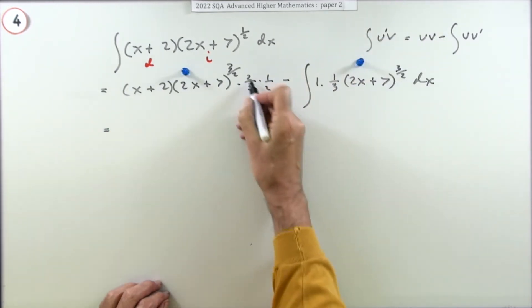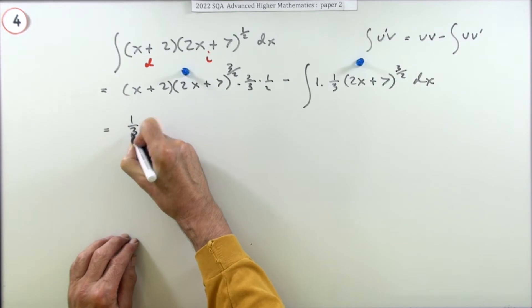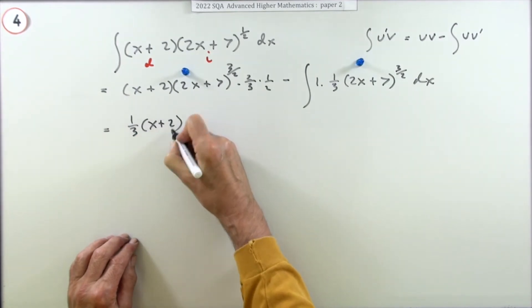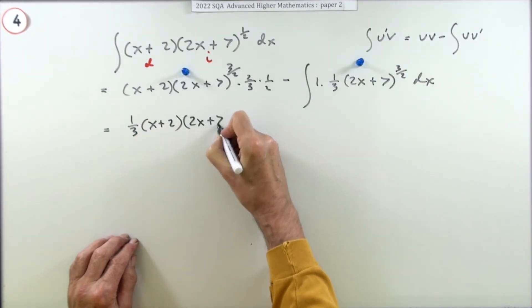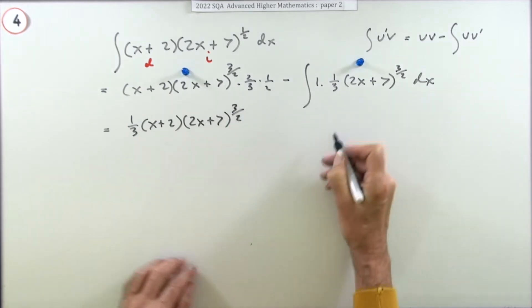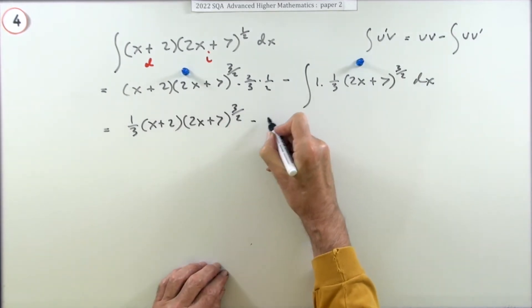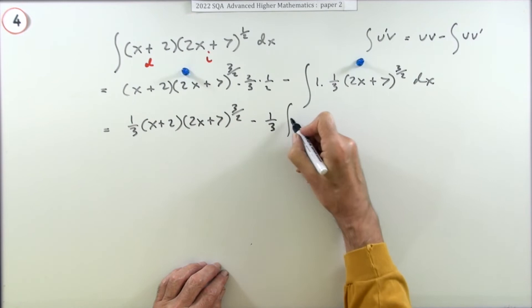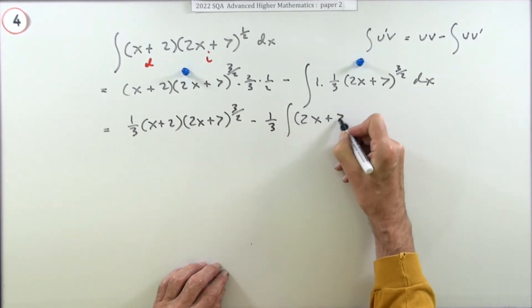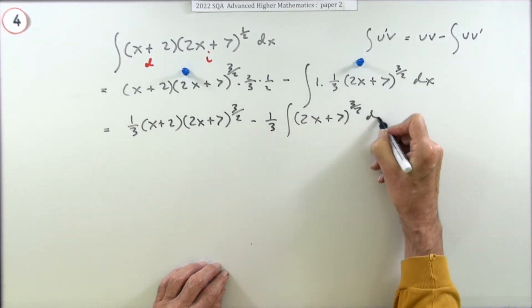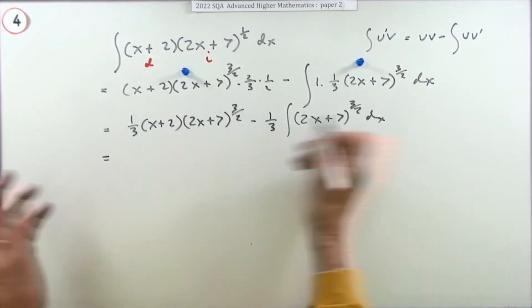Now it's just a case of tidying that lot up. Well that's a third, so that's that part done. Now I can take anything out of here, so that's minus a third of the integral of, and it was just that 2x plus 7 to the 3 upon 2 dx. Just lots of copying down now.